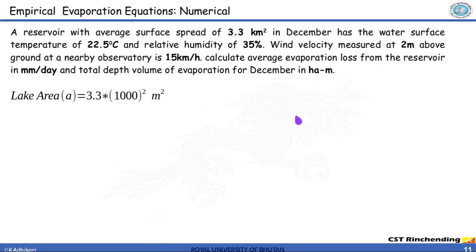To solve this problem, let's list down all the information that is given and also try to make the unit consistent. Area is given as kilometer square, that is 3.3 times 10 to the thousand raised to power 2, that much would be meter square.